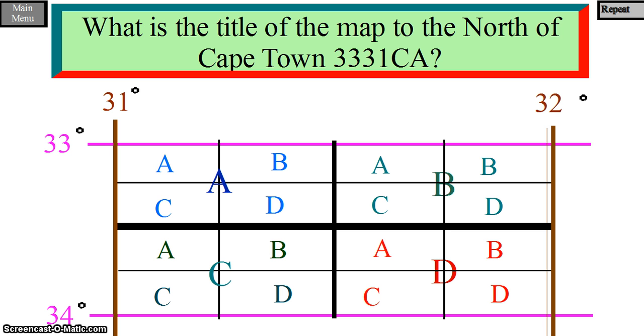The map title Cape Town 3331CA will be found in the area shaded blue.